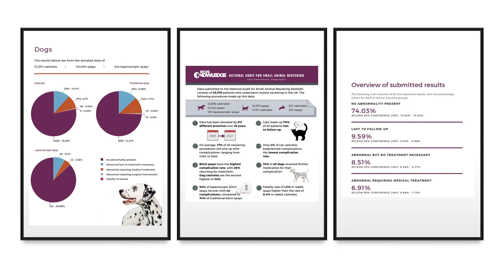The results you download give you an overview of outcomes overall — all species together — and then rates for each individual procedure. The infographic gives you the top 10 best tips and key stats from the data we receive.